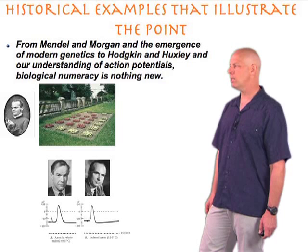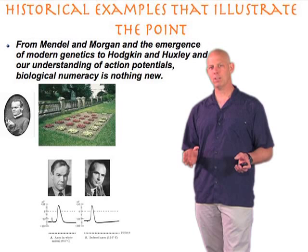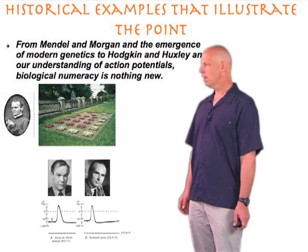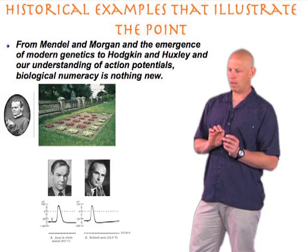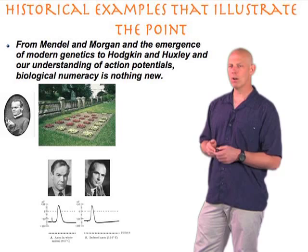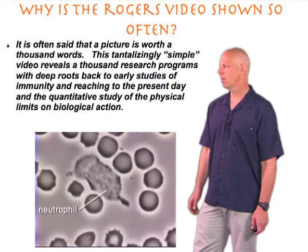In the hands of Thomas Hunt Morgan and his student Alfred Sturtevant, they were able to figure out the position on the chromosome of several different genes associated with the fruit fly. The other example is Hodgkin and Huxley, who put together an idea of the propagation of electrical signals in cells, which also had interesting quantitative features that they addressed in a quantitative fashion.